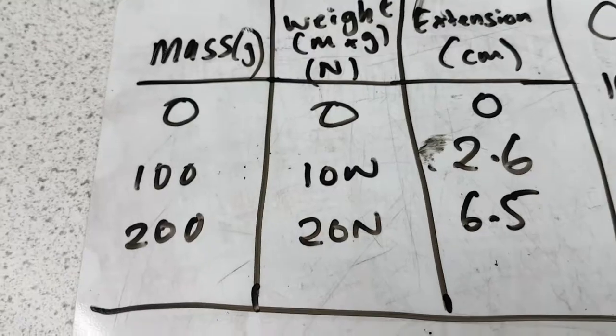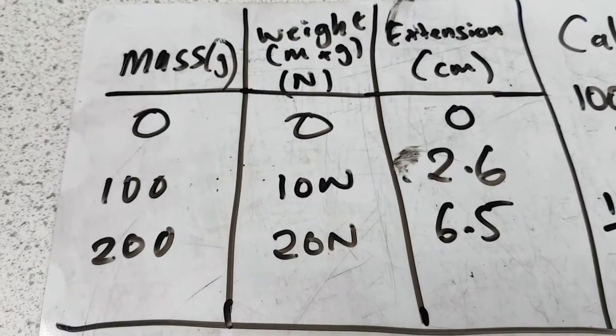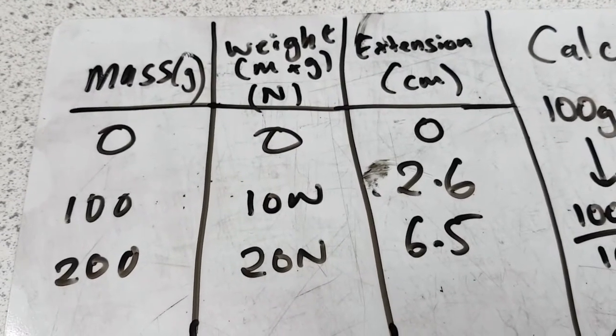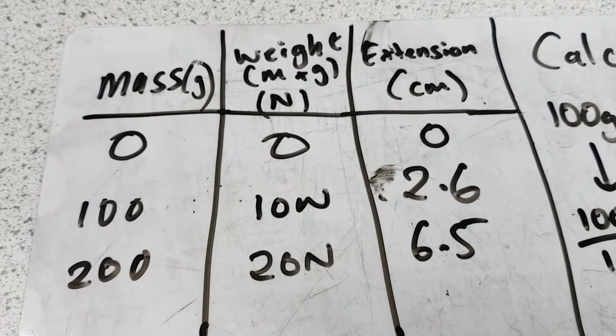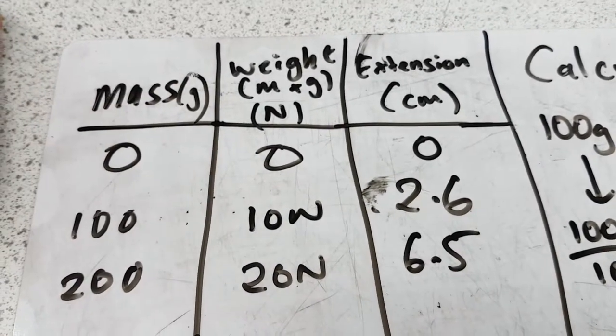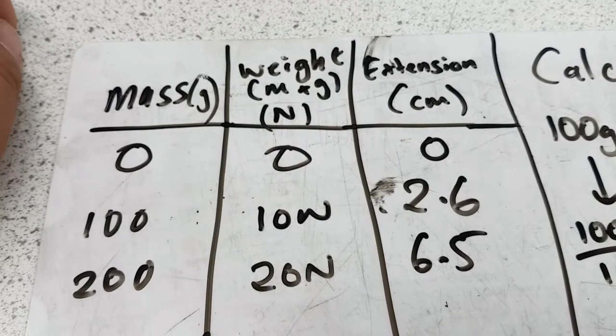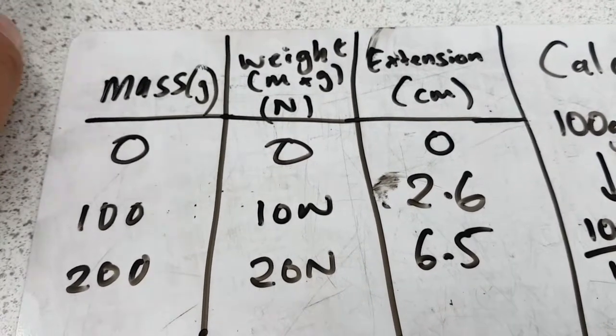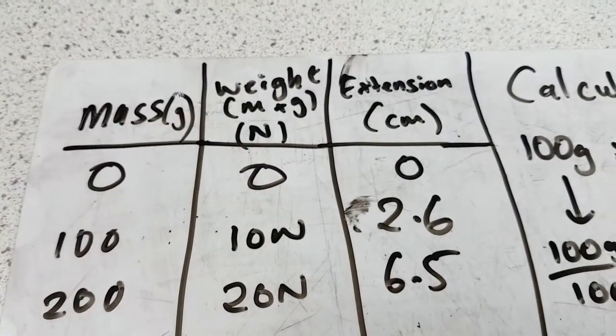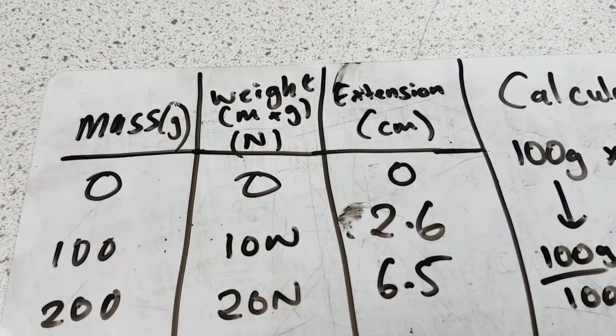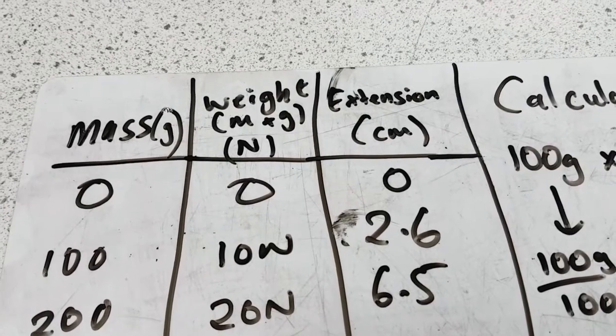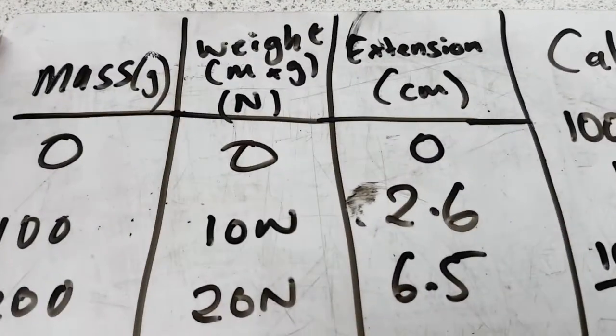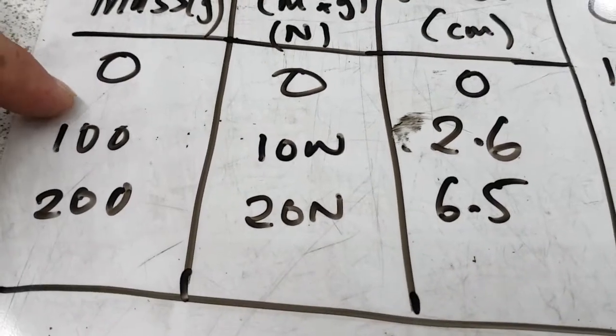I'm going to show you what the table looks like. This is what your table will look like. You've got your mass in grams that you're adding to the spring. You've got your weight, and to calculate weight, I'll show you how to do that in a bit. The weight is basically the mass multiplied by gravity on Earth, which rounded up is 10 newtons per kilogram. Weight is measured in newtons. And the extension, how much the spring extended by in centimeters.